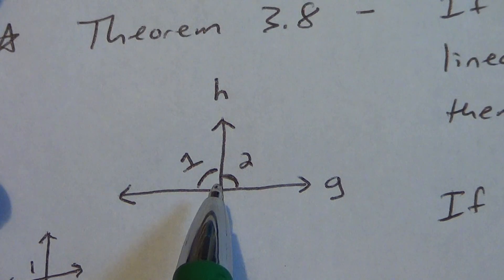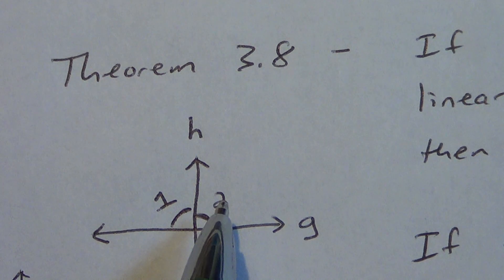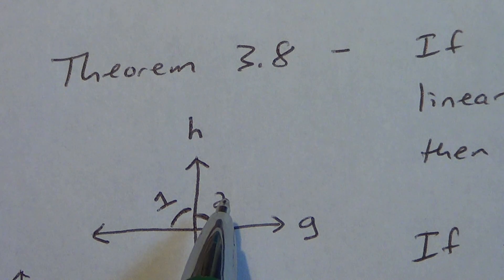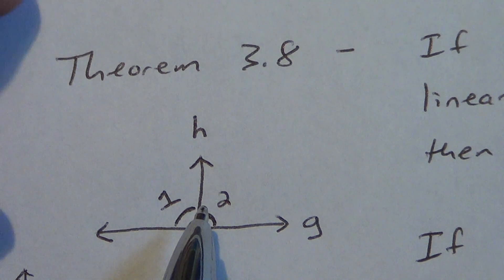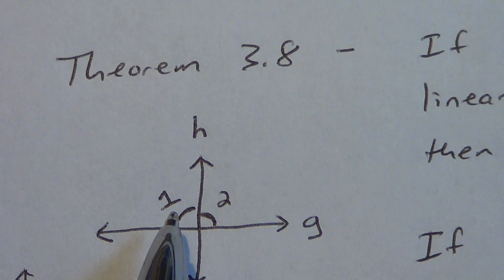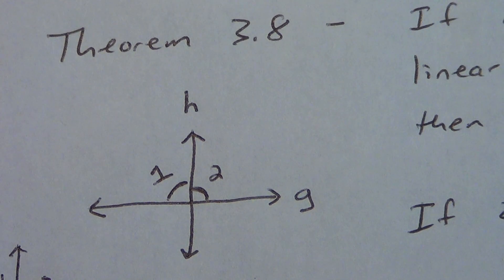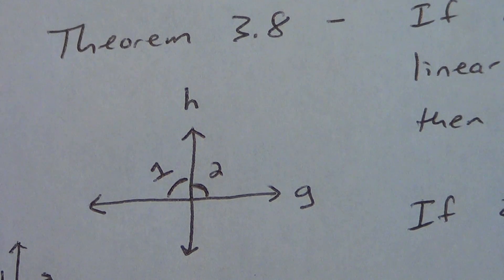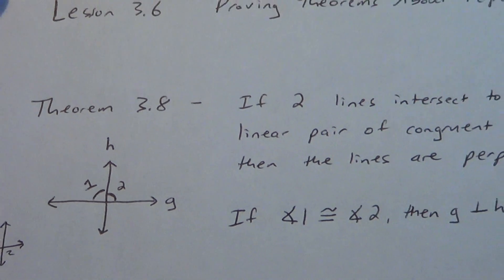Linear pair angles are congruent. We know a linear pair has to be supplementary, which means they add to equal 180. If these add to equal 180 and they're congruent — equal to each other — then the only numbers that are going to work are 90 and 90. You could use 80 and 80 for congruent, but that wouldn't give you the supplementary. So the only two numbers these can be are 90 and 90. And if they're 90 degrees, then obviously they're a right angle, and if it's a right angle, then we know the lines are perpendicular. So make sure you get Theorem 3.8 written down in your notes.